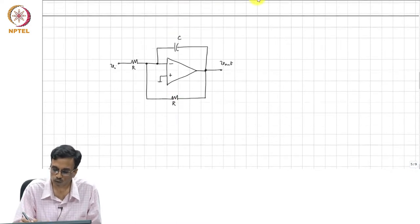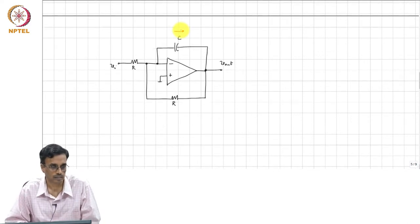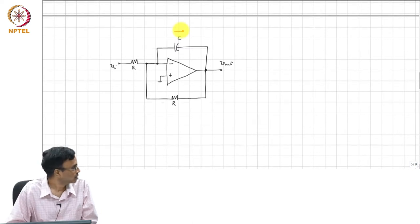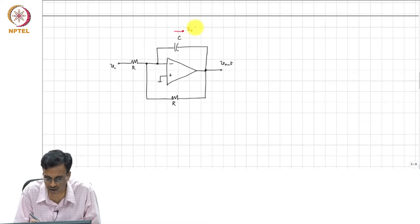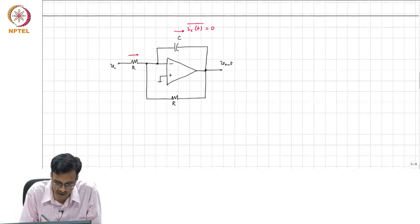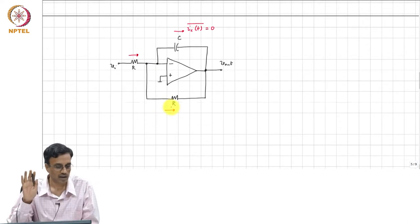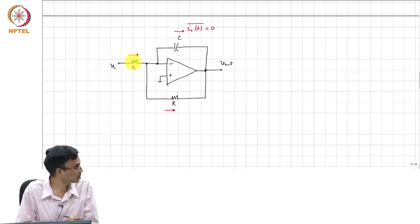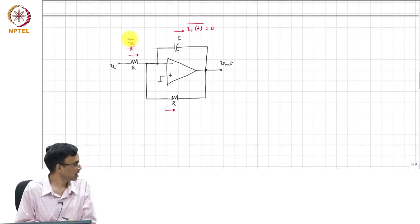If that is the case, what comment can we make about the average current through the capacitor? The average current through the capacitor is 0. If the average current through the capacitor is 0, what comment can we make about the average current here and the average current here? Both have to be exactly the same. The average current flowing through the input resistor is V_I by R, on average.